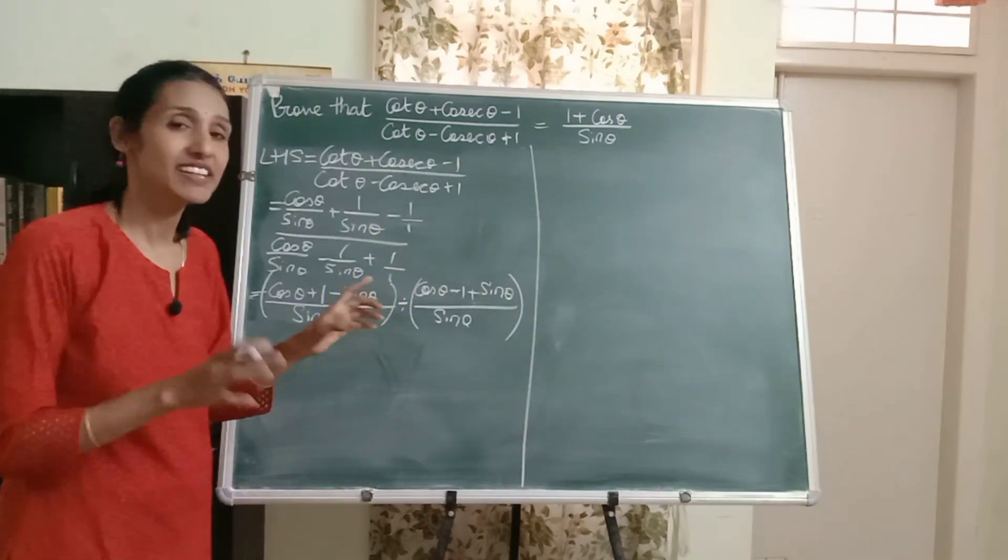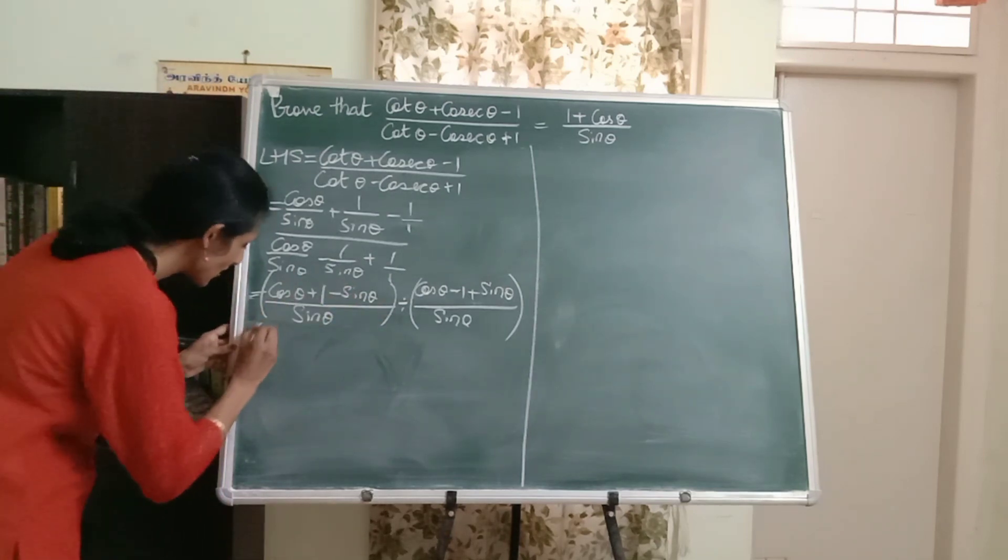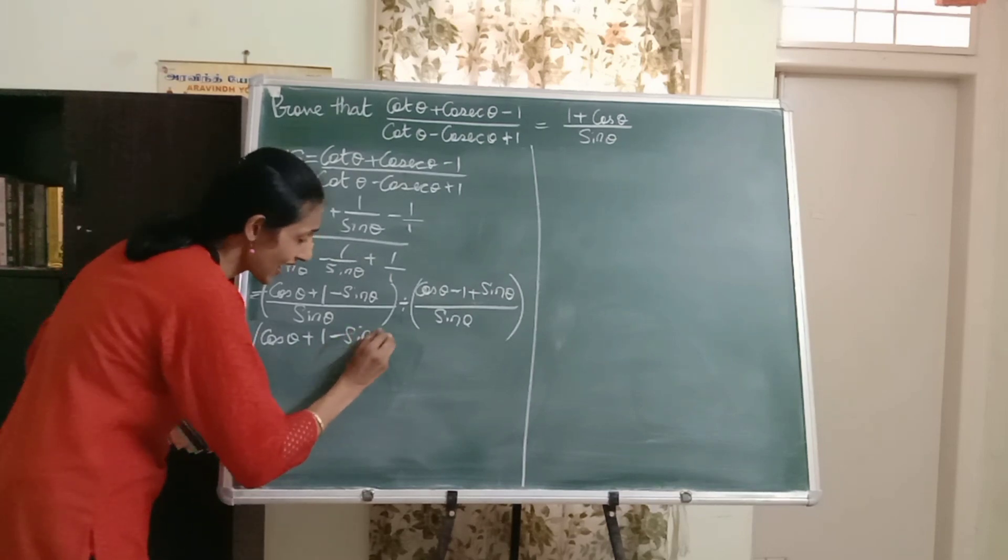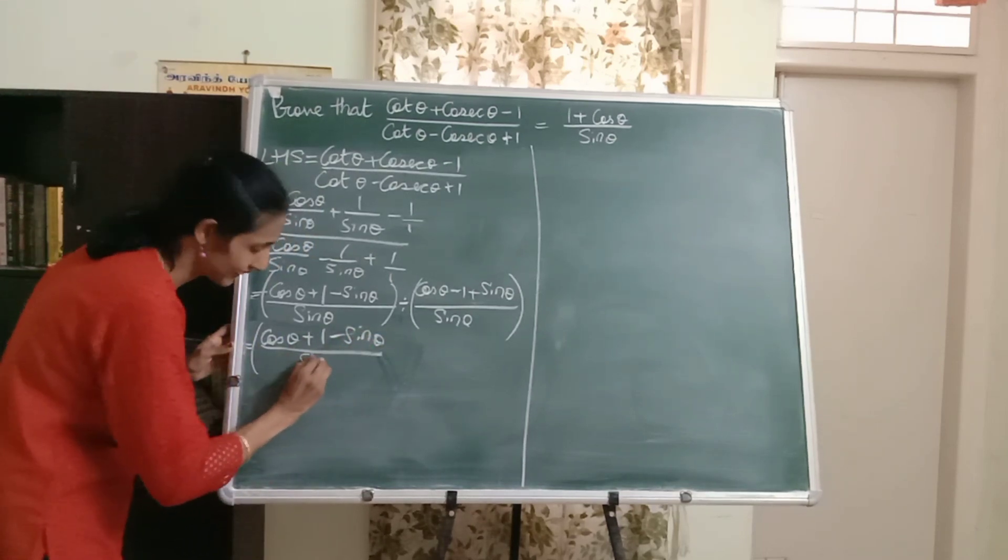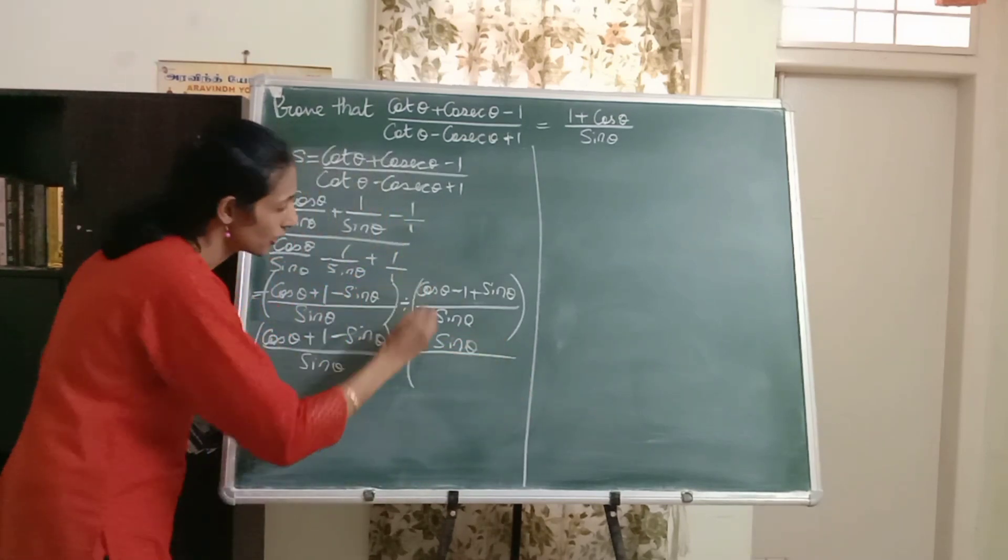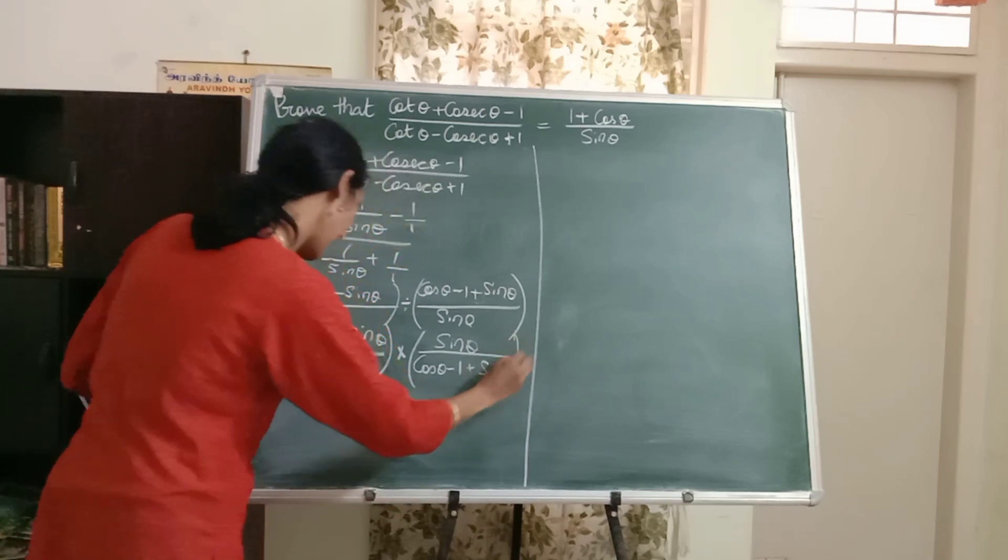Now here we have a division sign, but it's better if I convert it to multiplication. So let's do that. When I convert it to multiplication, I need to do the reciprocal. So let me reciprocate. Sine theta will come in the numerator, and this is what we get.